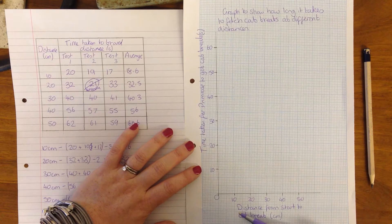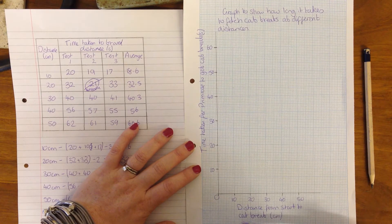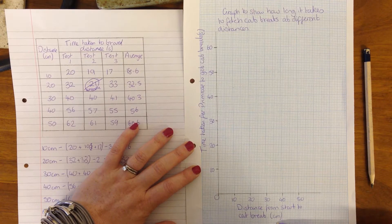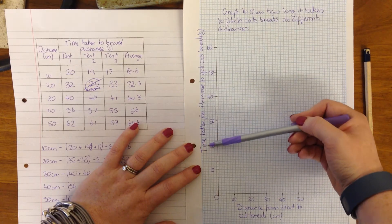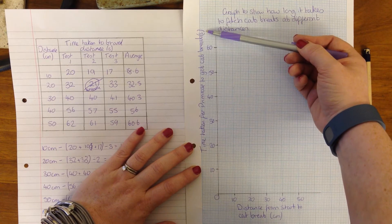You see I've labeled my axis down here, so this is distance from the start to the catheter, and I put my units in centimeters. Up the side it is time taken for primrose to get to the catheter, and I put my units in seconds.